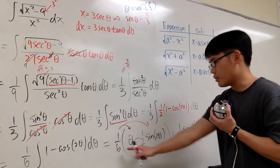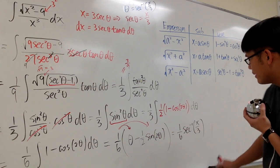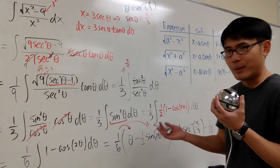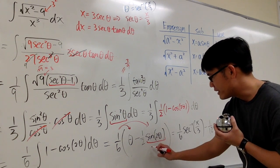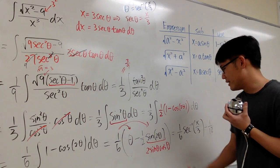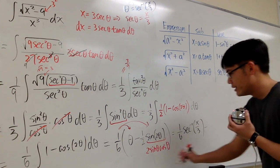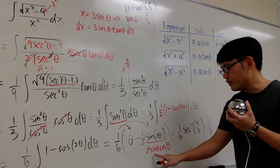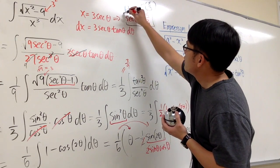And then one over six times negative one half gives negative one over 12. But we still need to handle sine of two theta. Using the double angle formula, sine of two theta equals two sine theta cosine theta. So we can cancel the two with the one half, leaving negative one over six times sine theta cosine theta.